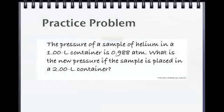Let's try a practice problem. This is from the textbook on page 443, number 2. The pressure of a sample of helium in a 1.00L container is 0.988 atm. What is the new pressure if the sample is placed in a 2.00L container?